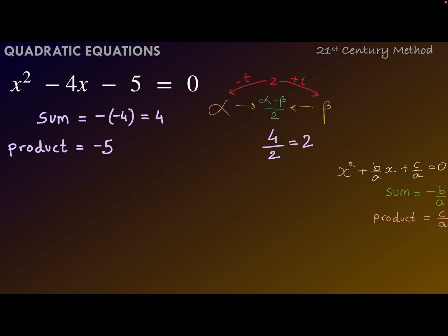Suppose the number 2 is at a distance of t from the two roots. Then 2 - t will give the first root alpha, and 2 + t will give the second root beta. So the product -5 can be written as (2 - t)(2 + t), which is ultimately the product of alpha and beta.